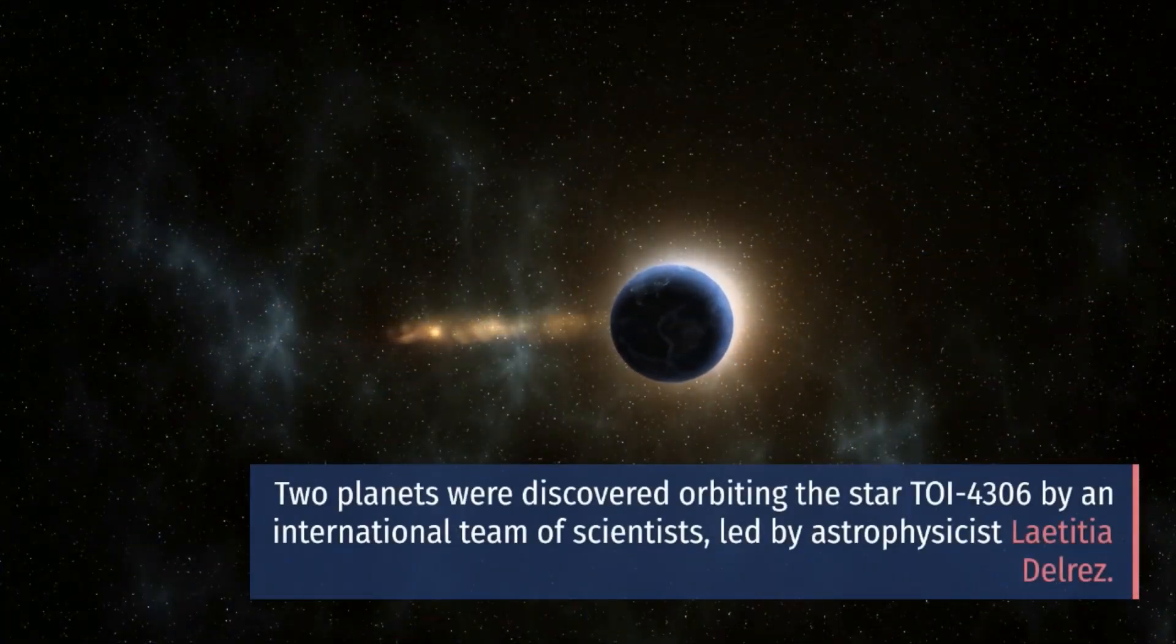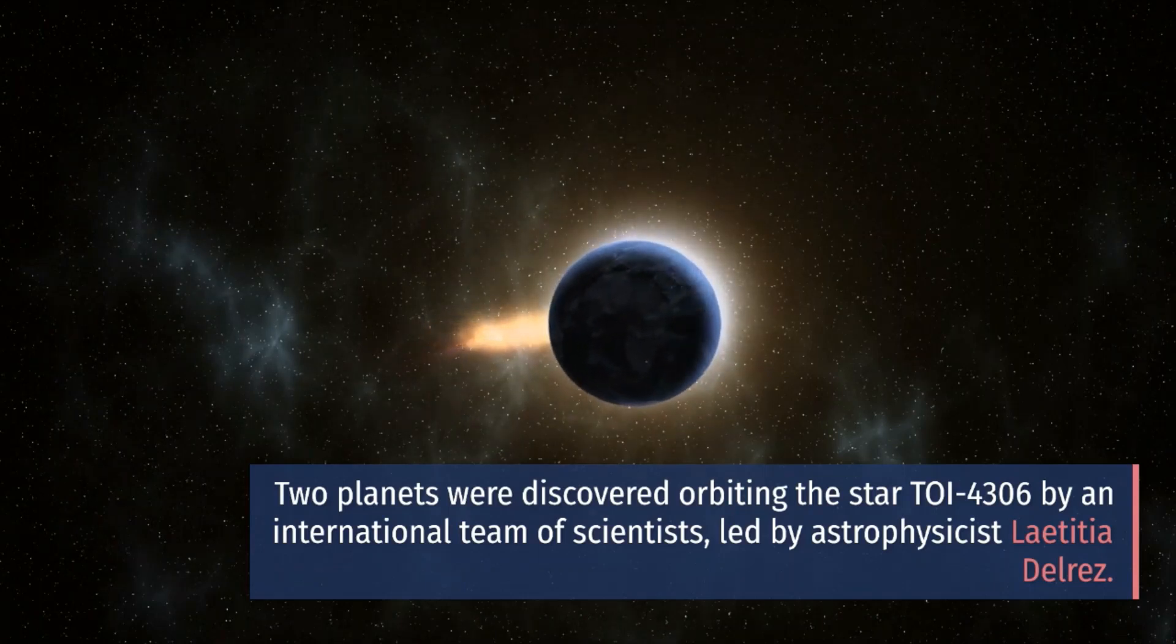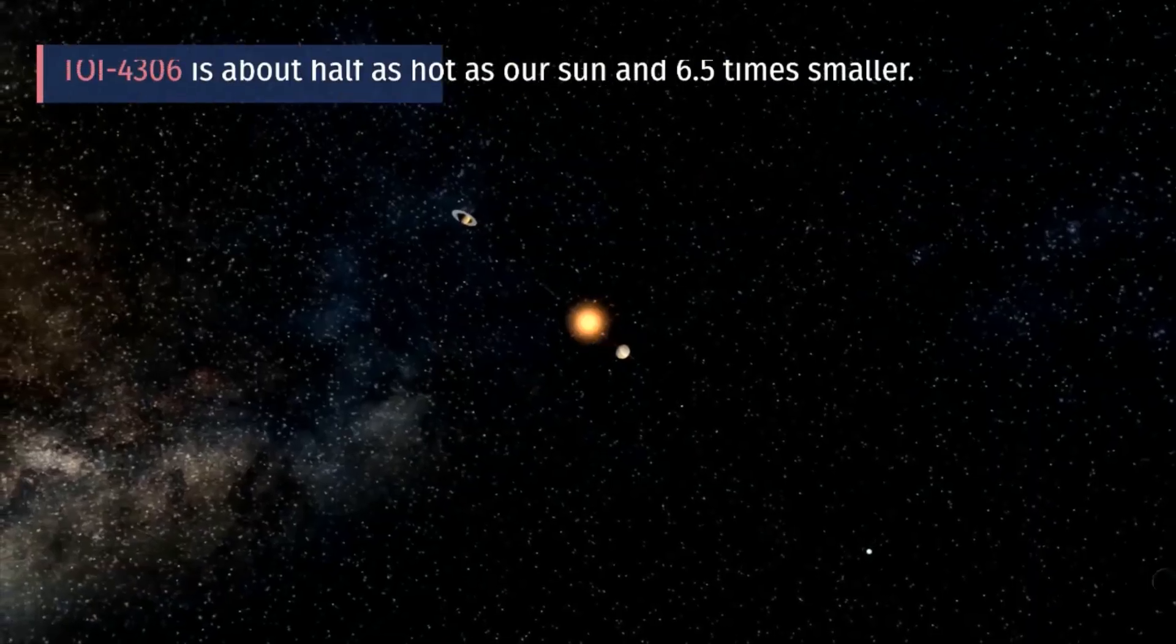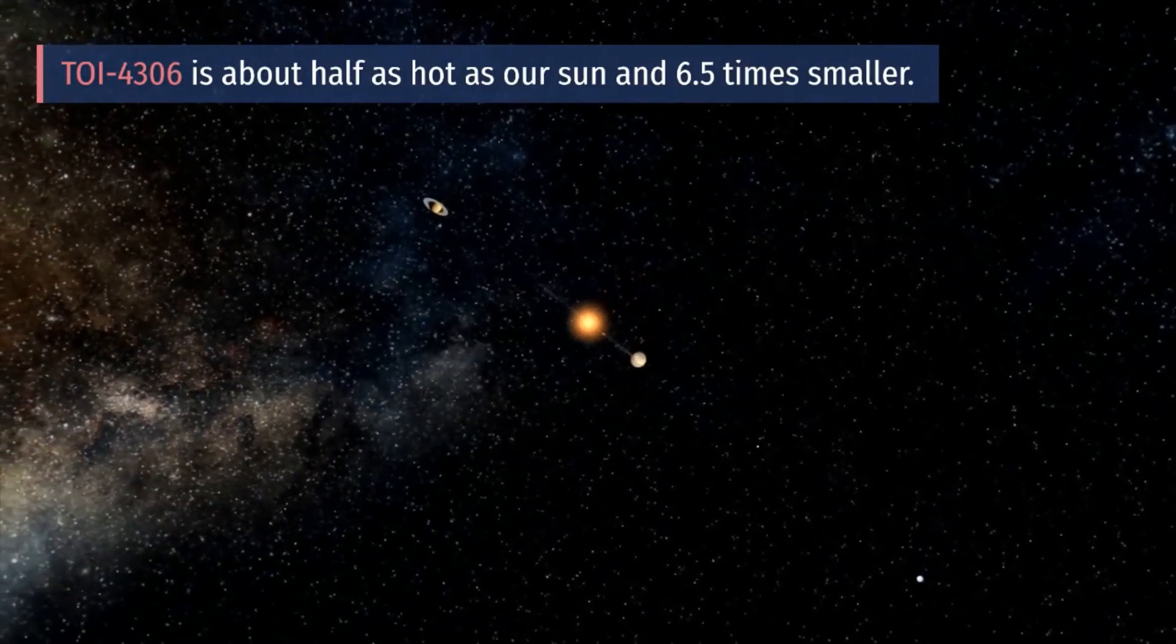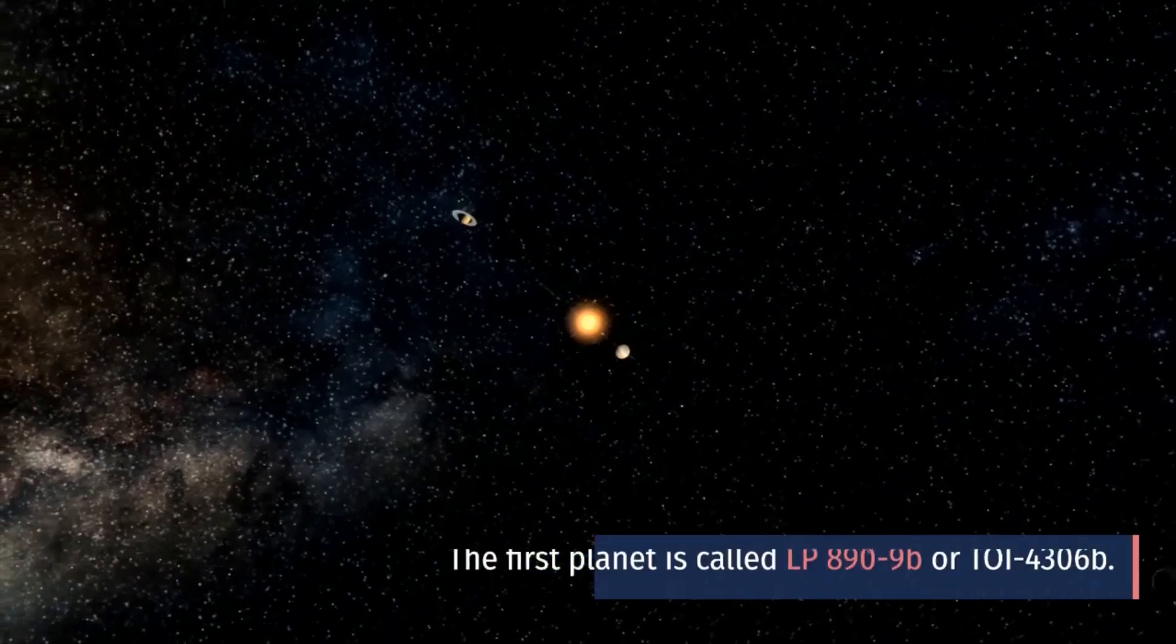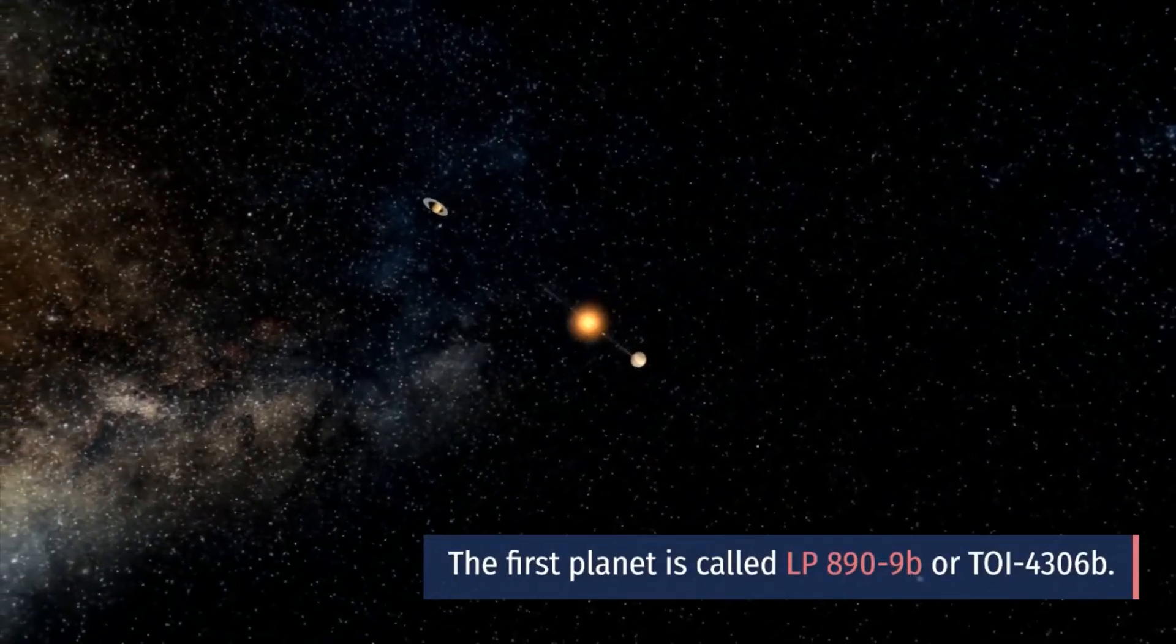TOI-4306 is about half as hot as our sun and 6.5 times smaller. The first planet is called LP 890-9b or TOI-4306b.